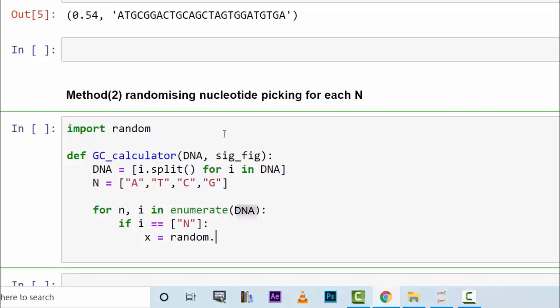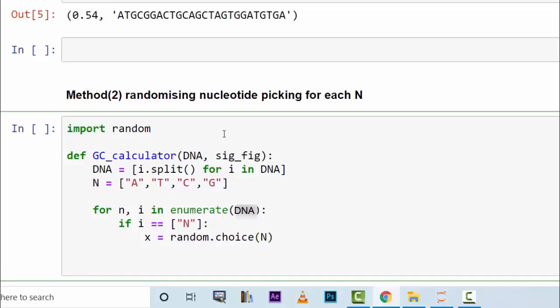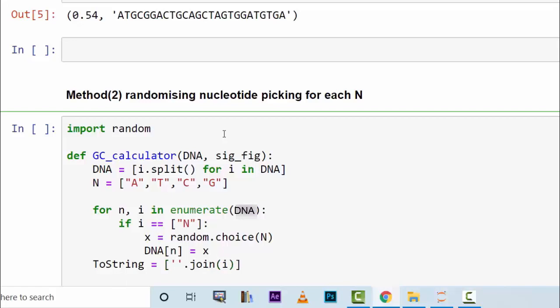We randomly pick a nucleotide and change the N to that nucleotide. So we can say random.choice. This is a random choice and change it. Then you can say DNA for the occurrence of N is equal to x. Now the change has happened but now we have to change this list that we have back to string. We can have a variable called ToString and this is equal to a list first because it's a two-step change.